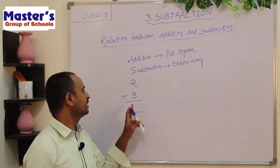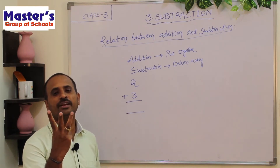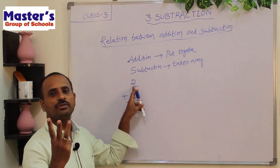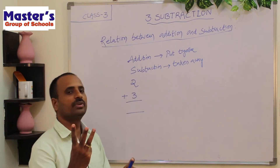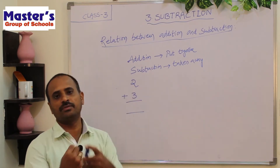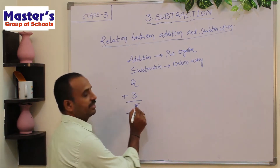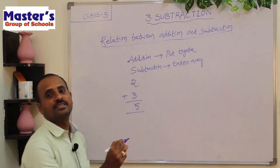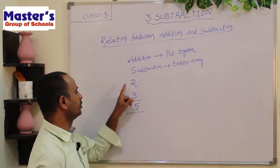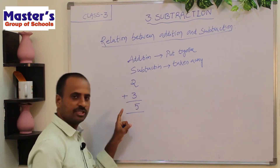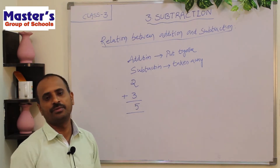So the answer is 5 and the sum is 5. You have already learnt in first and second class how to do these additions. If you add 3 to 2, you will get 5.